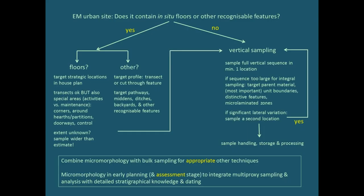Most importantly, we should combine micromorphology with bulk sampling for other techniques, but really do this at the level of microstratigraphy so that results can be correlated. Micromorphology should be placed in an earlier stage — in the planning and assessment stage of research. This is difficult because it's a method that takes a lot of time — you need two or three months to prepare samples — but it's the only way to really combine multiproxy methods with detailed stratigraphical knowledge and dating.